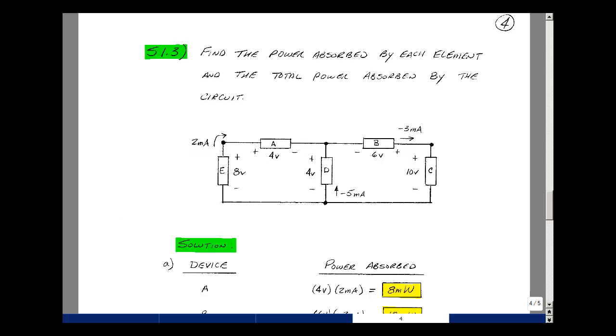For element A, we have 4 volts and 2 milliamps, so 4 times 2 milliamps is 8 milliwatts.